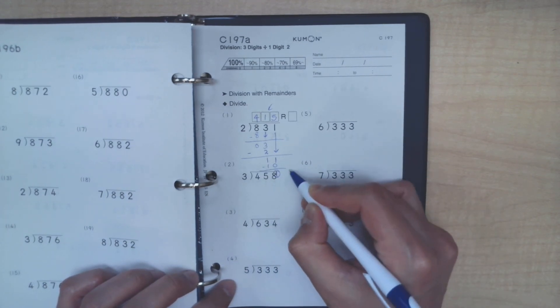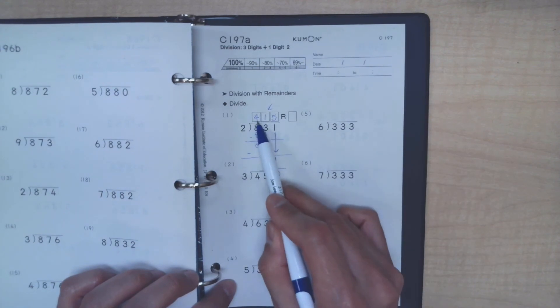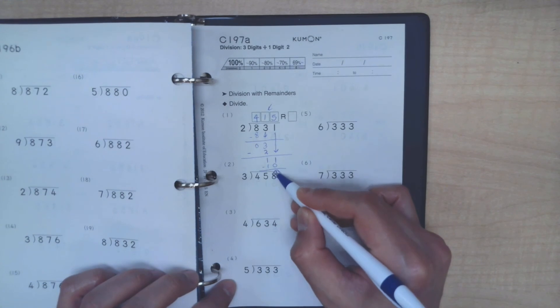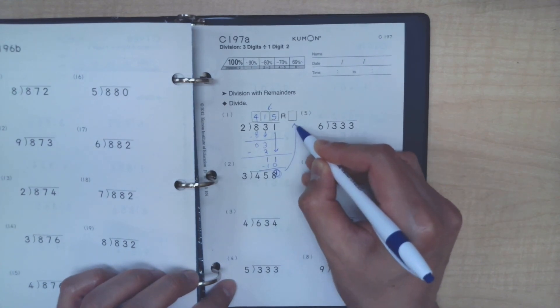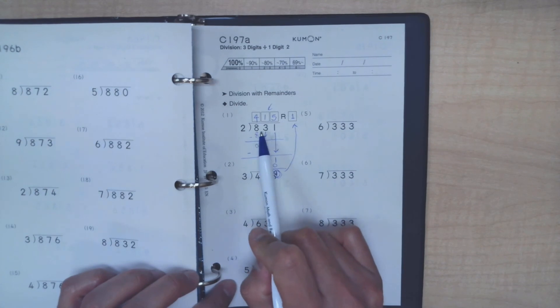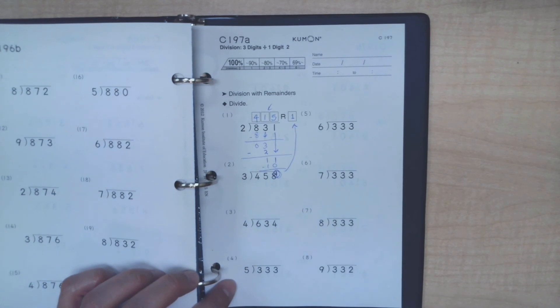So this 1, since we have completed filling out all 3 of our possible spaces, this very last one becomes our final remainder. The answer to the question 831 divided by 2 is 415, remainder 1. That's how it's done.